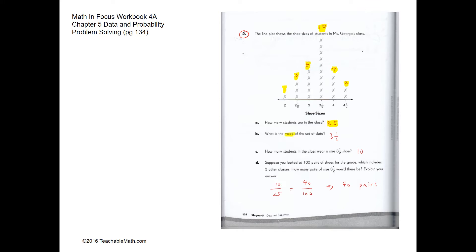The mode is the number with the highest occurrence, which is 3.5. Ten students in the class wear size 3.5. Now, suppose you look at 100 pairs of shoes for the grade — how many pairs of size 3.5 would there be?